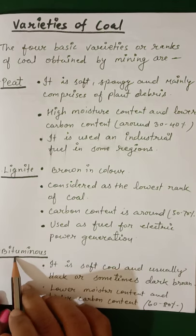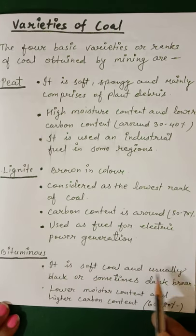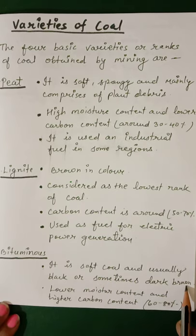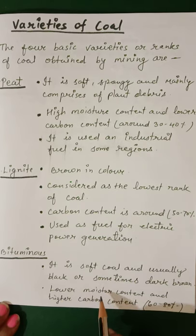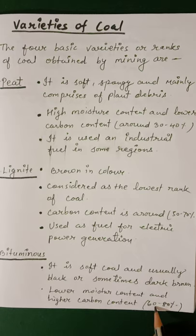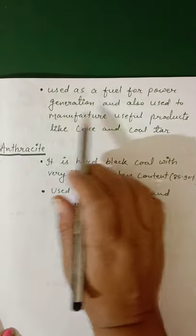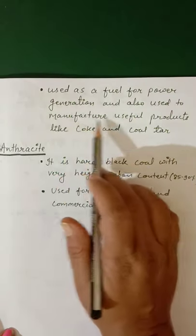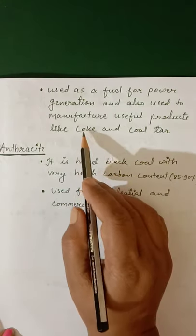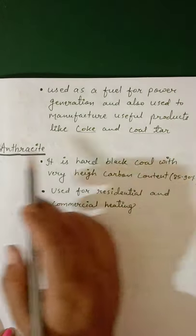The third type of coal is bituminous. It is a soft coal, usually black or sometimes dark brown. It has lower moisture content and higher carbon content — the percentage of carbon is 60 to 80%. It is used as a fuel for power generation and also used to manufacture useful products like coke and coal tar.